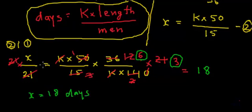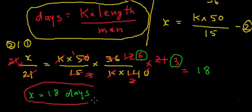So 18 days will be required to build a wall of 50 meter length when 15 men are working on it.